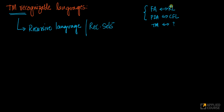Just as you might encounter the term 'recursive sets' instead of 'recursive language,' you might also encounter the term 'regular sets' instead of 'regular languages.' At the end of the day, a language is a set of words, so in some textbooks and articles you might see 'set' instead of 'language' — they mean the same thing in this context.